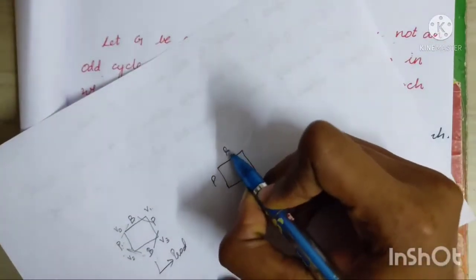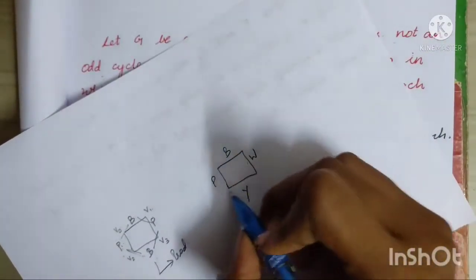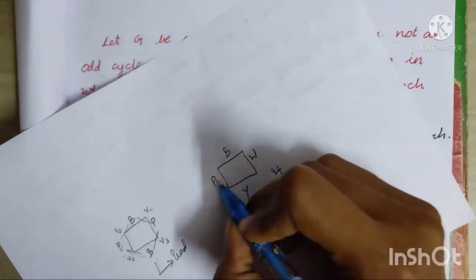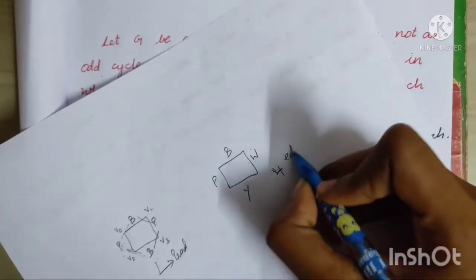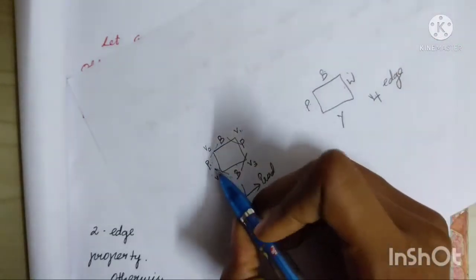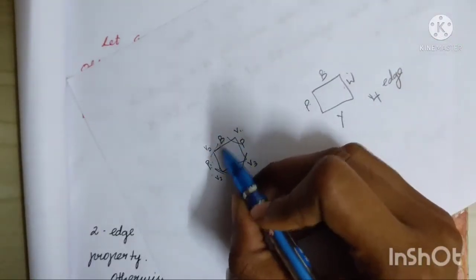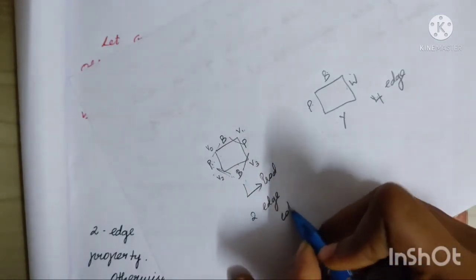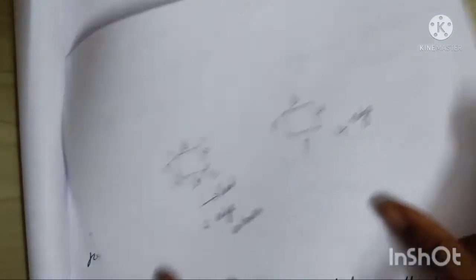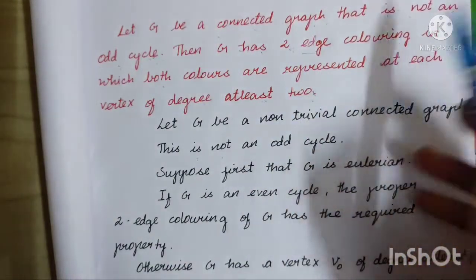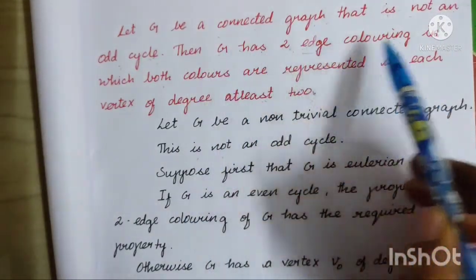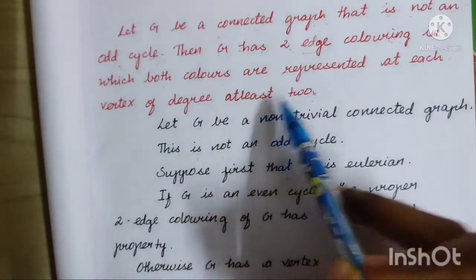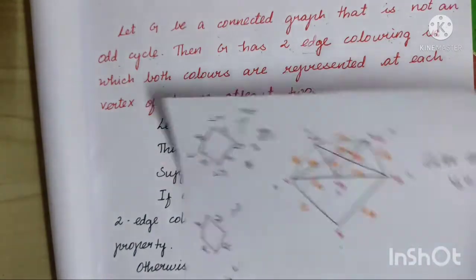Here is a graph using four different colors: pink, blue, white, and yellow — four edge coloring. Now this graph uses blue and pink only — that is two-edge coloring.